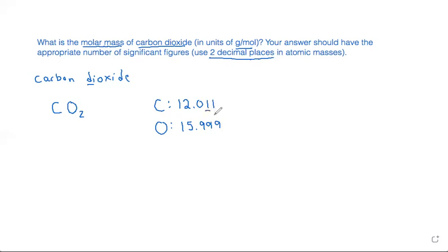So I will round both of these to two decimal places, which gives me 12.01 with two decimal places, and 16.00 because this nine makes this nine go up, adds one to the nine which adds one to the five, giving me 16.00.